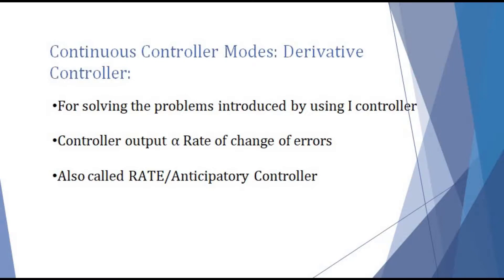In a derivative controller, the controller output is directly proportional to the rate of change of errors, and hence it is also known as a rate controller. Derivative controller is also known as an anticipatory controller because it anticipates the upcoming errors. Yeh future errors ko anticipate ya predict karta hai ki future mein kis type ka error system ke liye hanikarak ho sakta hai, toh usi errors ke liye controller output generate kiya jaata hai.